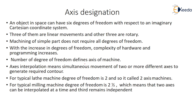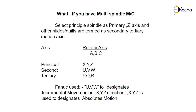The number of degrees of freedom defines the axis of machines. Axis interpolation means simultaneous motion of two or more different axes. In a typical lathe machine, degrees of freedom is two, so it is called a two-axis machine. A milling machine has degrees of freedom of two and a half, meaning two axes can be interpolated at a time and the third remains independent. In a multi-spindle machine there are different axes.